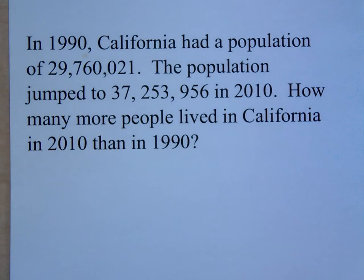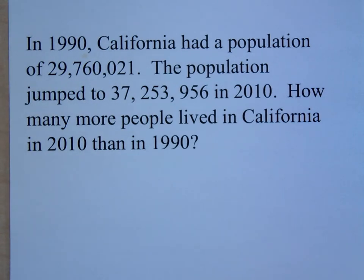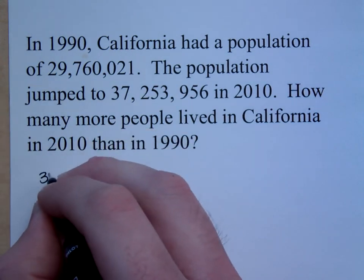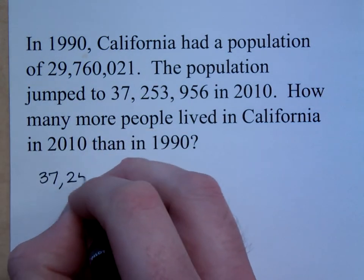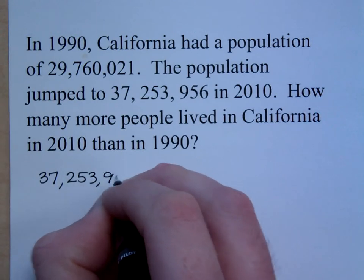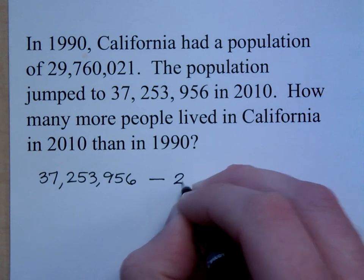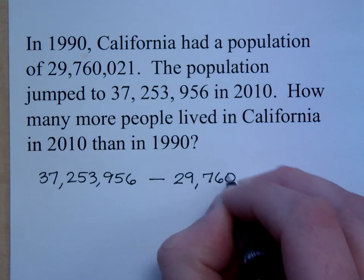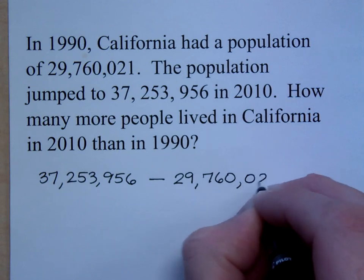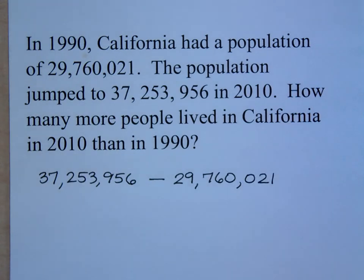So how would you set this up? You're saying from 37,253,956 minus 29,760,021 — we want to find that actual difference. But before we do that, because I want to make sure we are heading in the right direction, if we use front-end rounding, where will we end up?